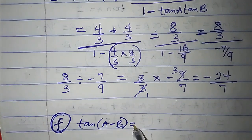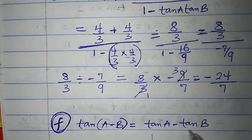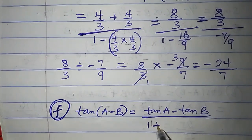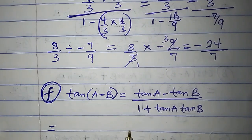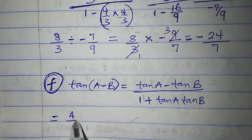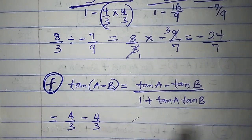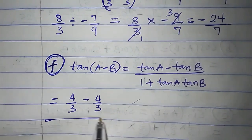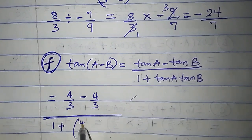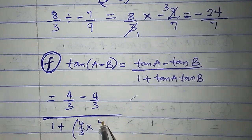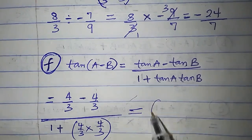Tan(A−B). Tan(A−B) = (tan A − tan B) / (1 + tan A · tan B). Tan A is 4/3 and tan B is 4/3. It's obvious the answer is going to be 0. Divided by 1 plus (4/3)(4/3). The numerator is 0, so everything automatically becomes 0.